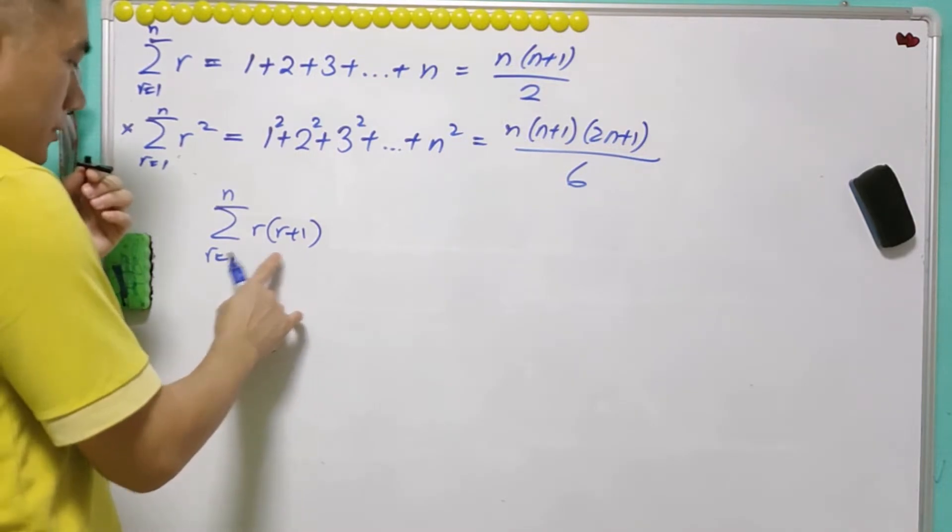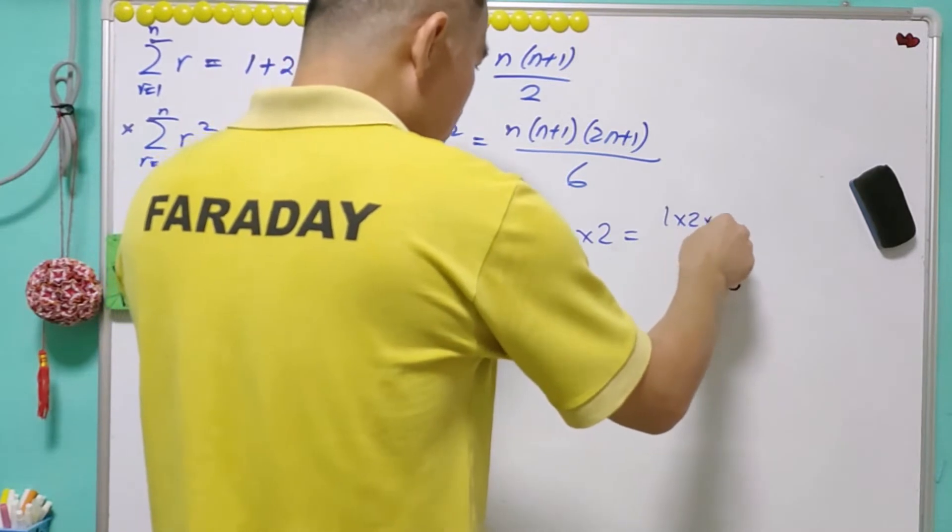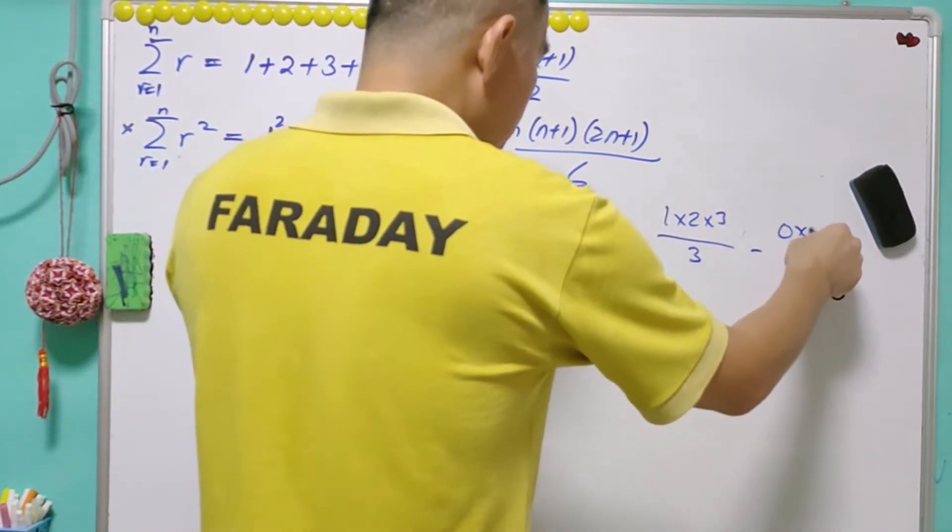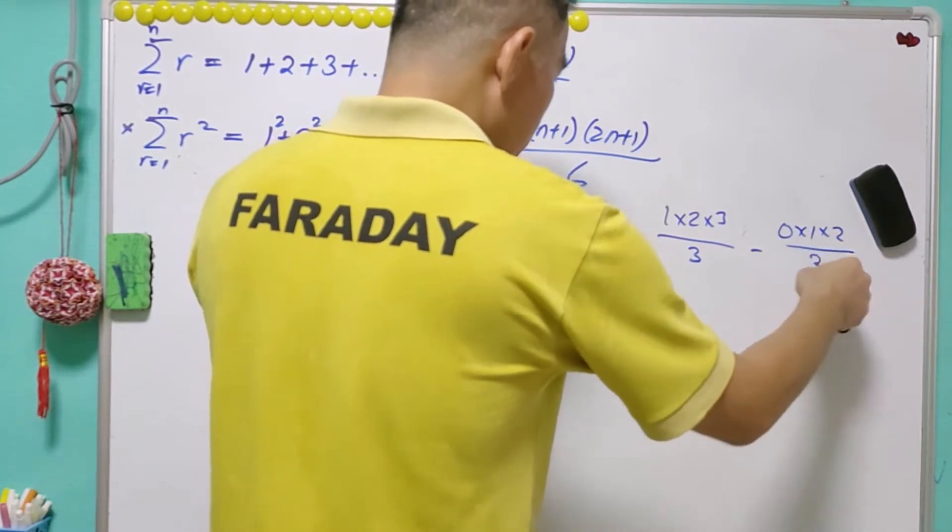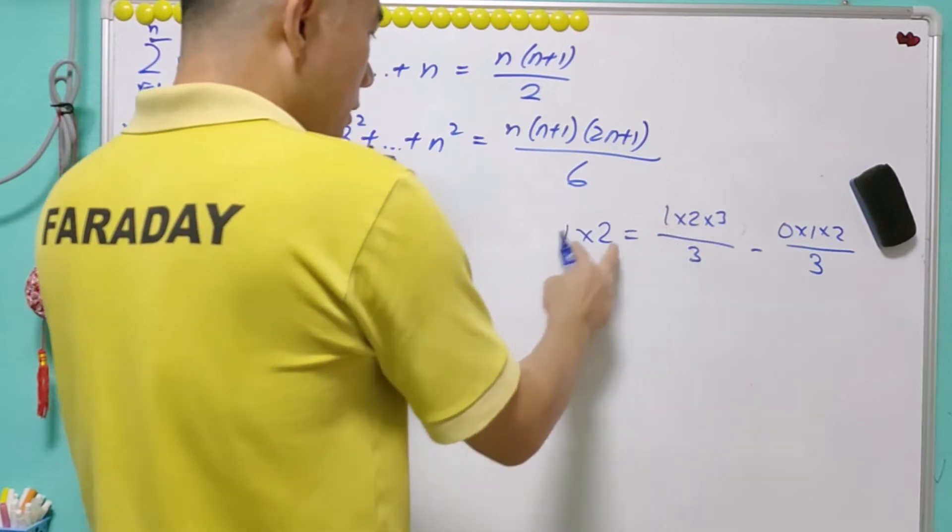For r(r+1), when r equals 1, it is 1 times 2. So 1×2×3 over 3 minus 0×1×2 over 3. It looks a little bit weird, but this cancels off, you get a 2.